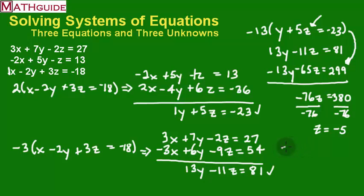I'm going to plug it in right here for that Z value. So Y + 5 times Z equals negative 23. But remember, Z is negative 5. So I get Y - 25 = -23. So to cancel this, I add 25 to both sides.